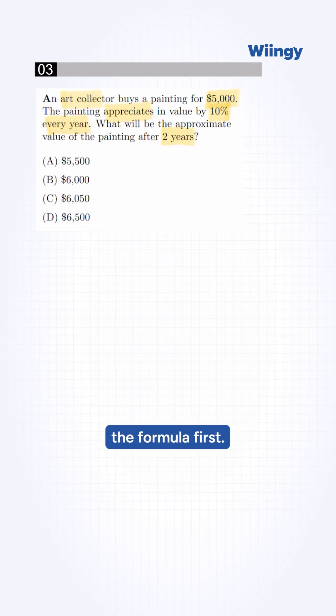Here we need to identify the formula first. Appreciates means the value increases. We need to add 10% to the value each year. So the formula is basically final equals original times 1 plus rate raised to time.